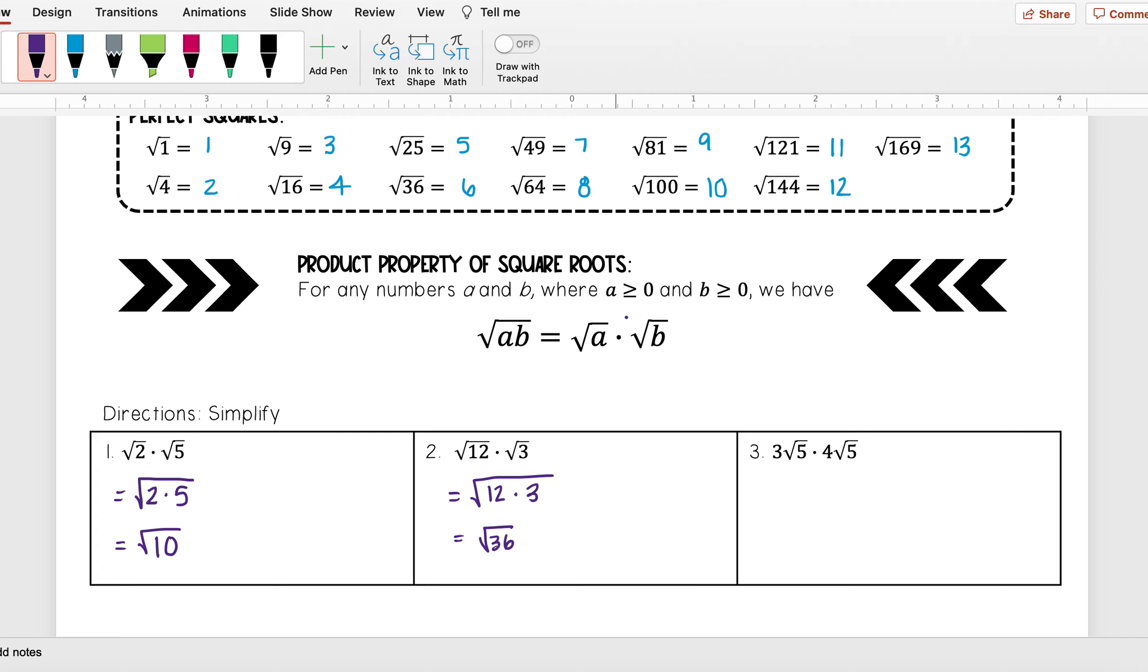So I'm going to go ahead and first rearrange these so that my like terms are by each other. So I want to have 3 times 4, my whole numbers, times the square root of 5 times the square root of 5.